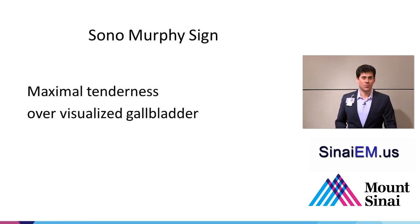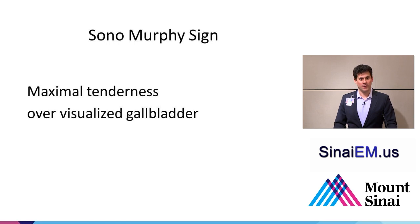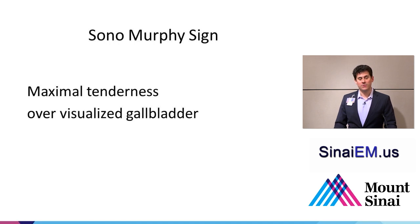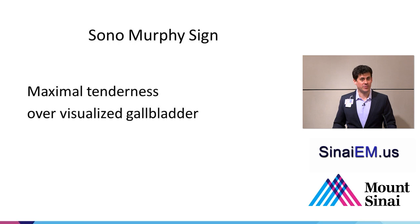The sonographic Murphy sign is different from the regular Murphy sign, where palpation in the right upper quadrant causes arrest of inspiration. With the sonographic Murphy sign, when you visualize the gallbladder underneath your ultrasound probe, pressure there is the maximal area of tenderness. You place the probe in different locations and ask: does it hurt most when I press here, or here, or here? If the most tenderness is elicited over the visualized gallbladder, that's a sonographic Murphy sign.